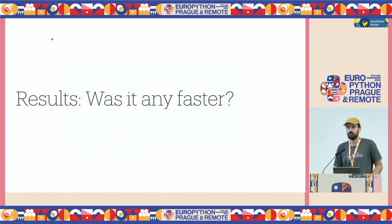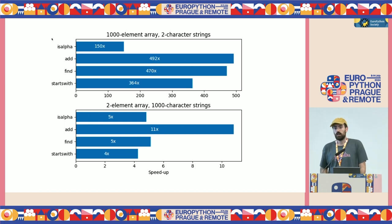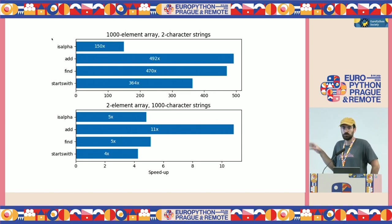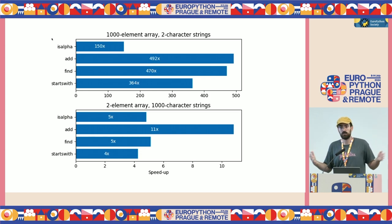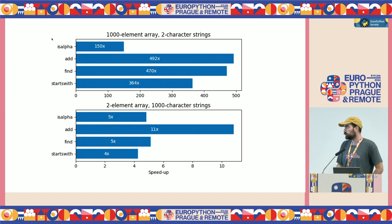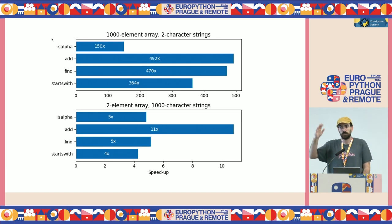Was it any faster after all? The answer is yes, much faster. For example, add had the most significant speedup — about two orders of magnitude. Specifically, it was 492 times faster — not 4.92, but 492x — and that's only for a thousand-element array. For even bigger arrays, the speedup will be even greater. That's the overhead of creating Python objects back and forth and calling Python functions eliminated. Even for basic functions like isAlpha, we had speedups upward of 100x for relatively small thousand-element arrays.